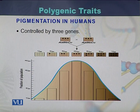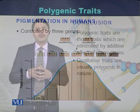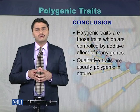This diagram or graph shows how there is variation in the height of humans. Pigmentation in humans is controlled by at least three genes.